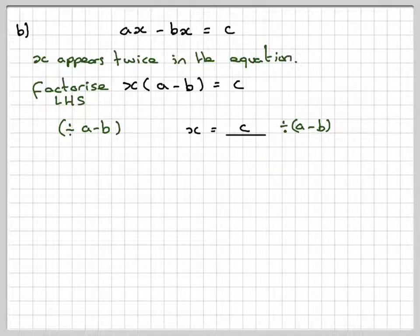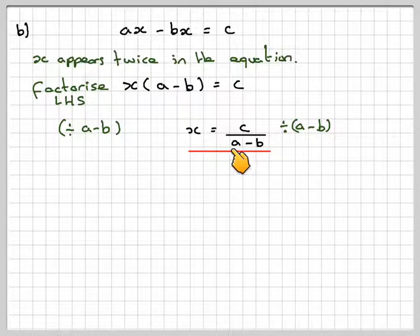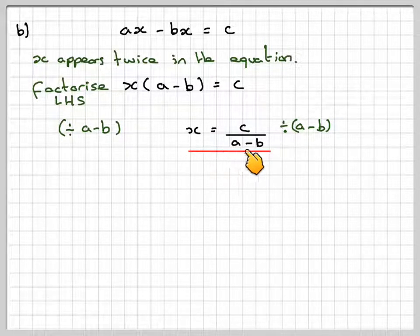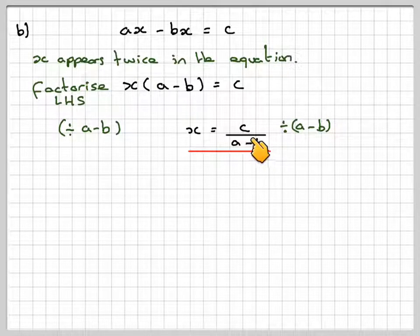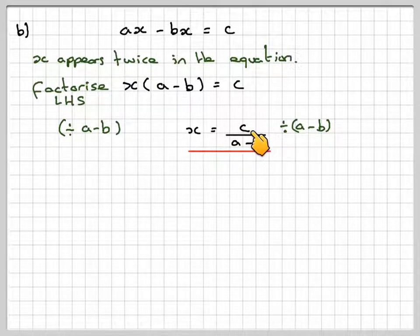In algebra we draw a line to introduce a fraction. Some books write this in brackets, but it's not absolutely necessary - the line acts as a bracket. It's c divided by the result of a minus b.